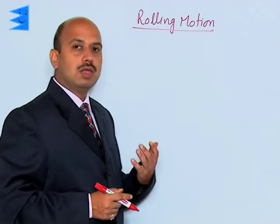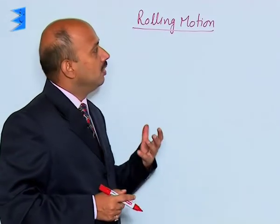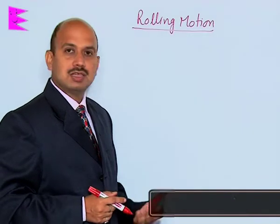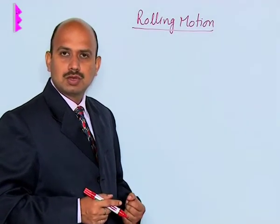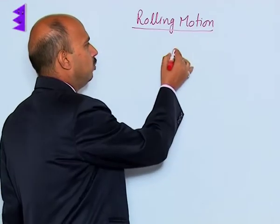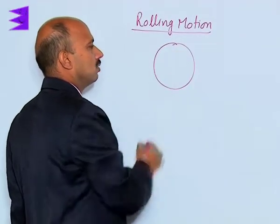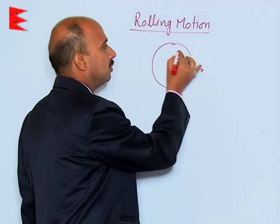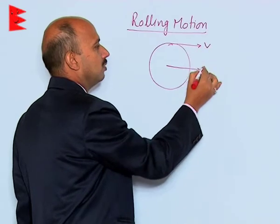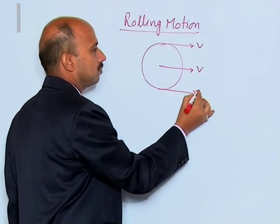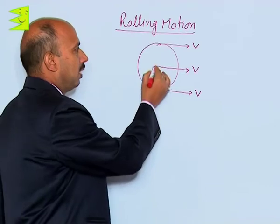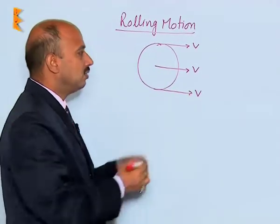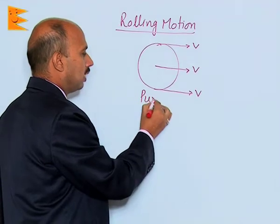We are going to discuss rolling motion. In rolling motion, it is actually a combination of pure translational as well as pure rotational motion. For example, suppose there is a disc which is having pure translational motion — it means every part of this body is moving with velocity V in this direction. The center of mass and every point is moving with the same velocity; that is an example of pure translational motion.